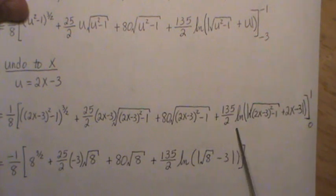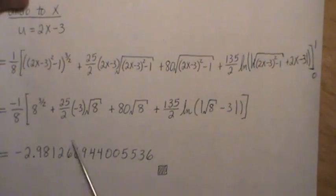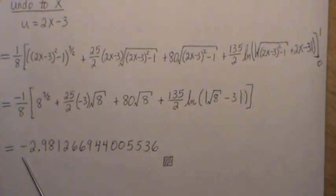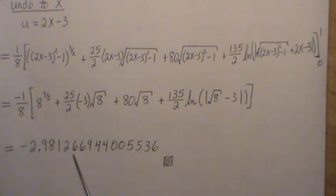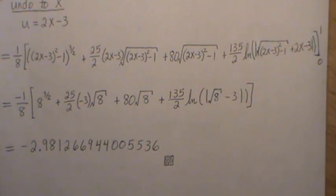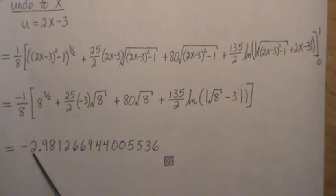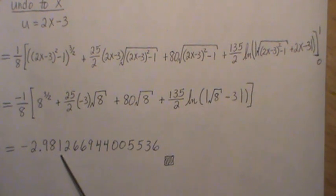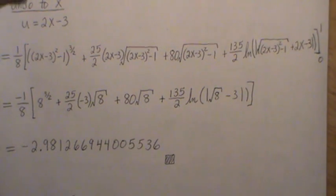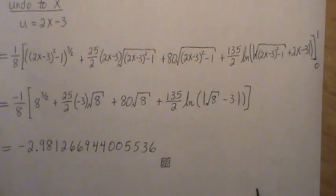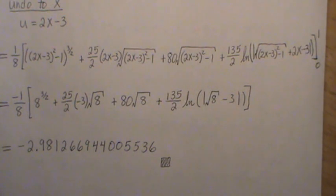Then to evaluate this, we get this, minus 2.98126694, blah blah blah. So if your PIN code is four digits, I would guess that the PIN code is 2981. But in reality, I would speculate that this was just a fun problem, not meant to be solved in reality. So anyway, that's my solution to the viral ATM PIN code riddle.